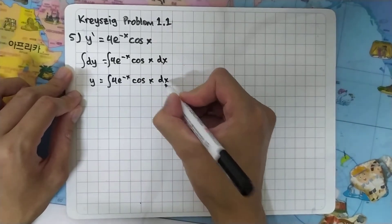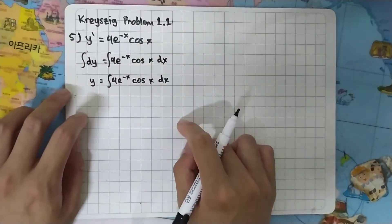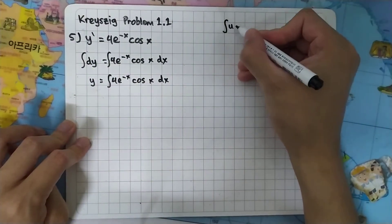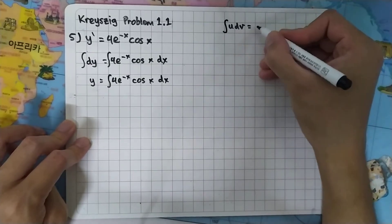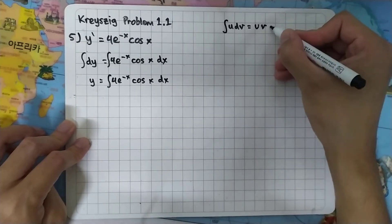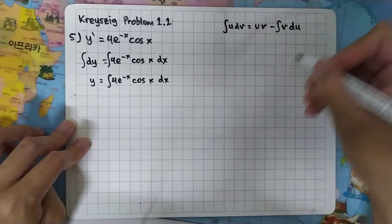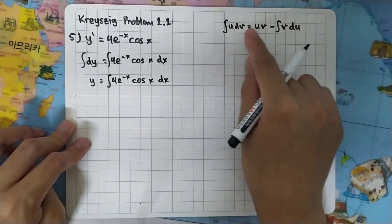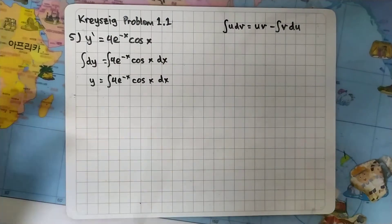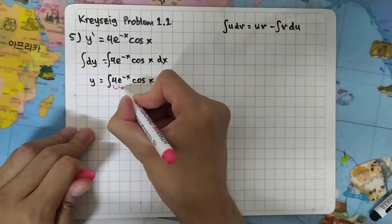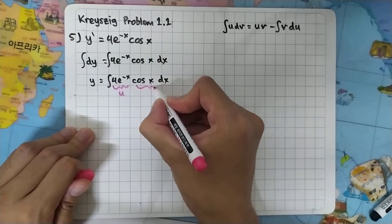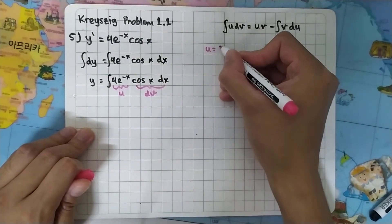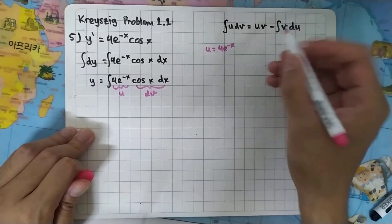To integrate the right hand side, we need the integration by parts formula. The formula is: integral of u dv equals u v minus integral of v du. We need to carefully choose which part is u and which is dv. Here we will choose e to the minus x as our u and cos x dx as our dv.